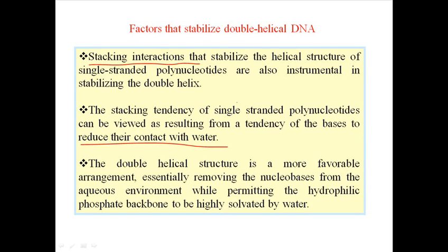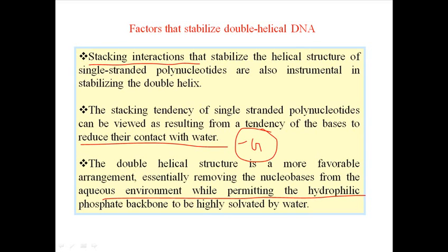The same can be observed in DNA. The hydrophobic nature of the bases helps them come together to make a compact, inward structure. The double helical arrangement is more favorable because it essentially removes the nucleobases from the aqueous environment while permitting the hydrophilic phosphate backbone to remain outward, making ΔG slightly negative and thermodynamically favorable.